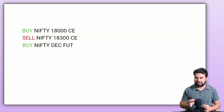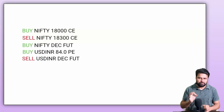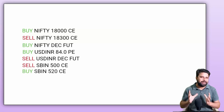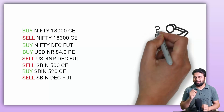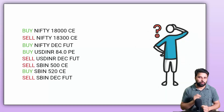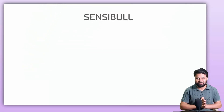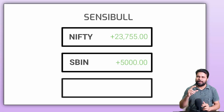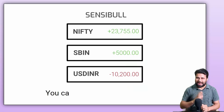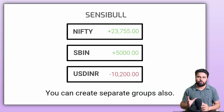When you trade multiple strategies, the position page can look very confusing and it will be very difficult for you to think straight. Sensible can help you with this, where your positions are grouped by underlying and you can create separate groups also as per your convenience.